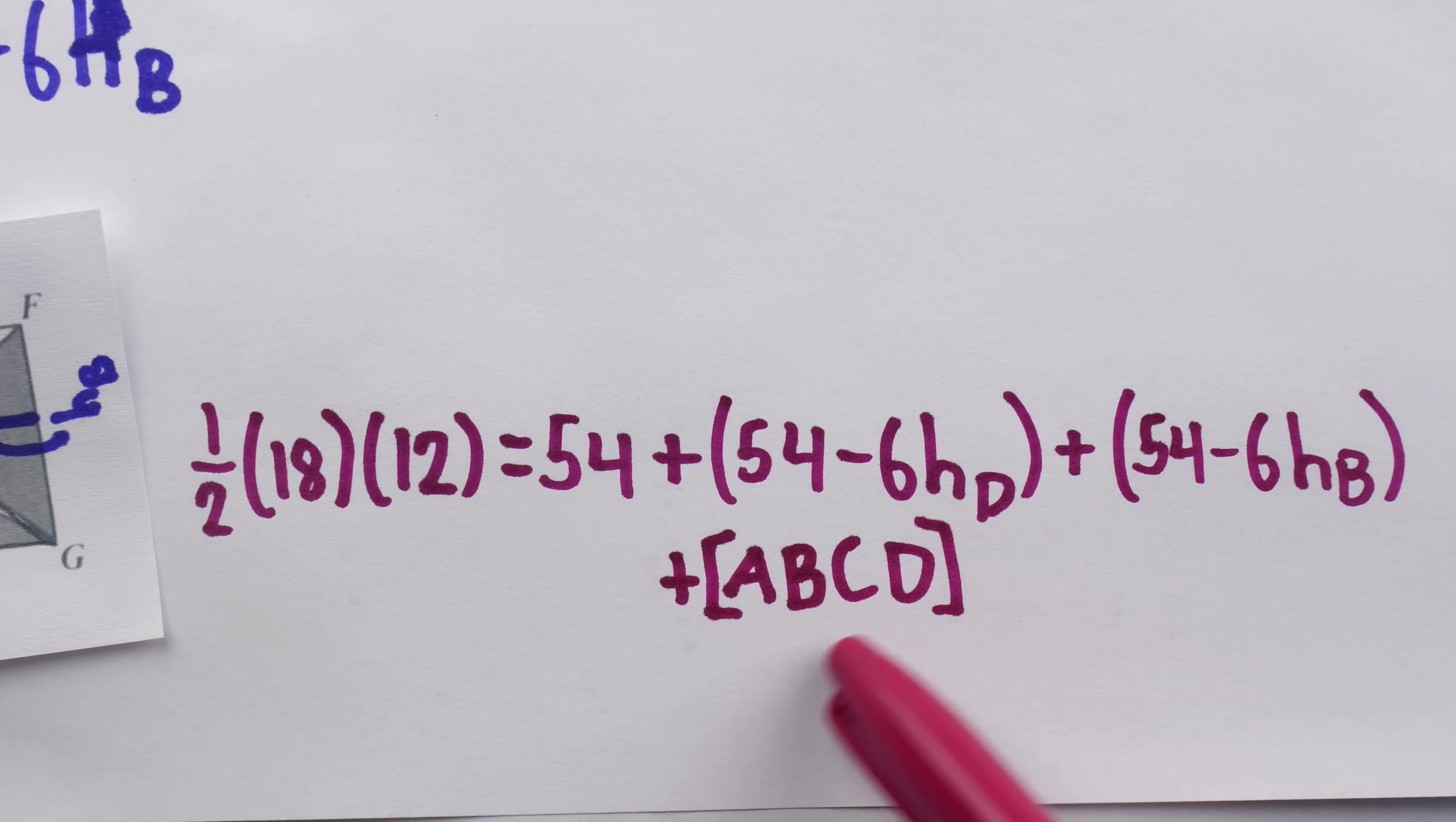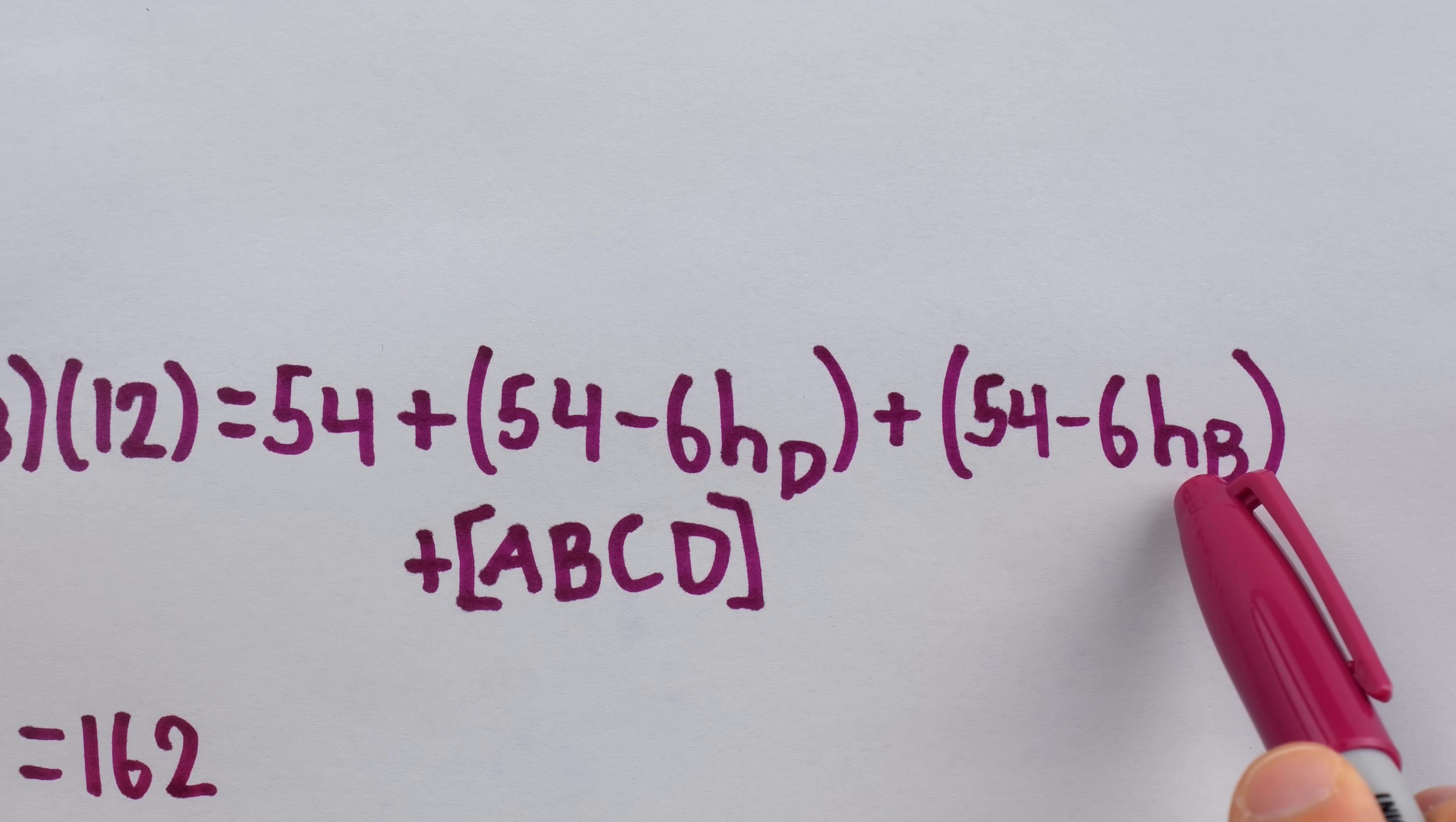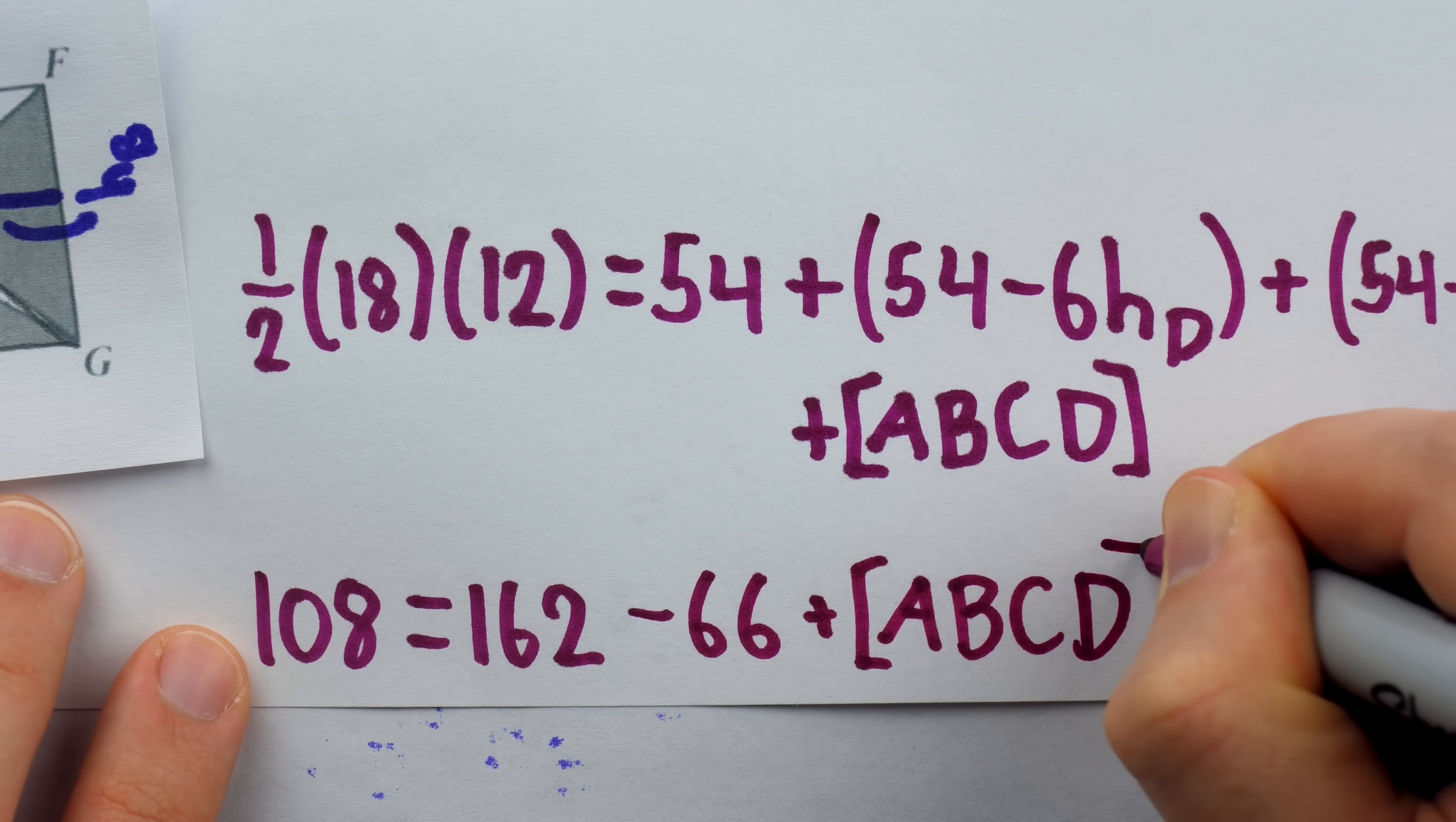That will leave ABCD as the only unknown area. Alright, so, 1/2 of 18 is 9, times 12 is 108. So, we have 108 equals 54, plus 54, plus 54, is 162. Then, minus 6h_D minus 6h_B, is minus 6h_D plus 6h_B. 6h_D plus 6h_B is 66. So, that's minus 66. And, of course, the last thing on the right side of the equation is plus the area of quadrilateral ABCD.